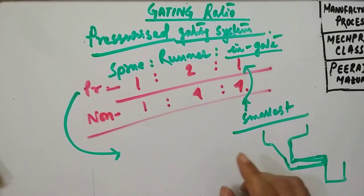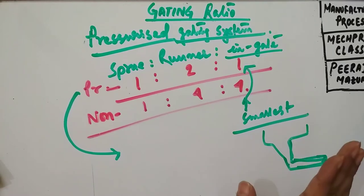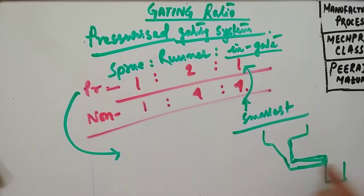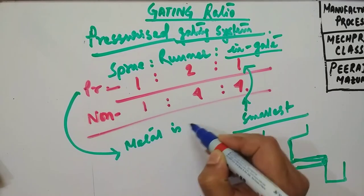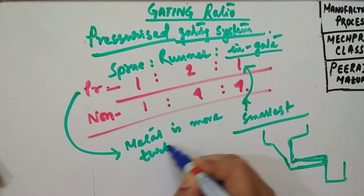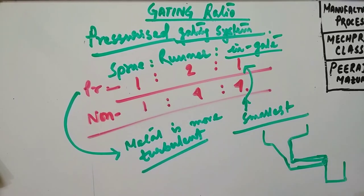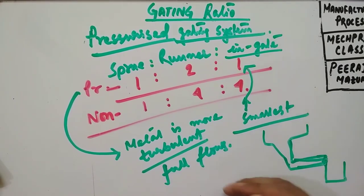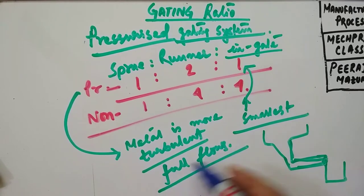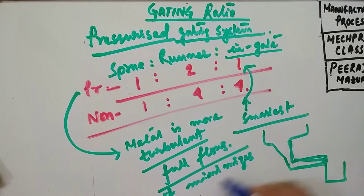Due to this back pressure in the gating system, the metal is more turbulent for this case. Metal is more turbulent and generally flows full, and thereby can minimize the air aspiration. So this pressurized system minimizes air aspiration effect. That is very important.